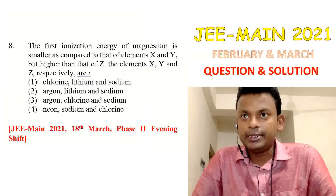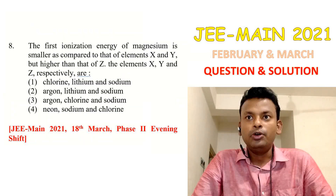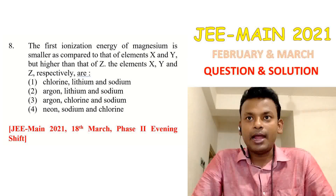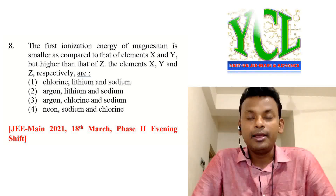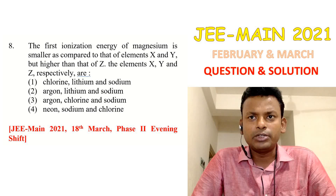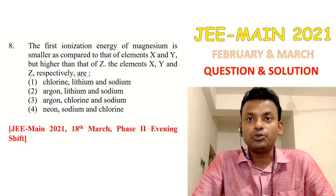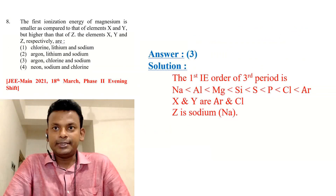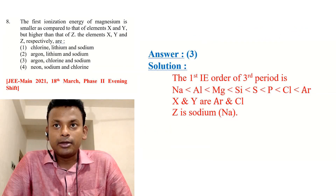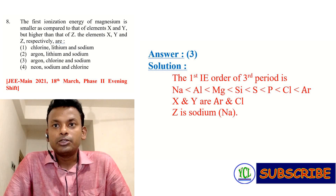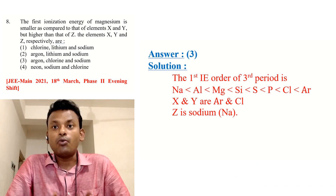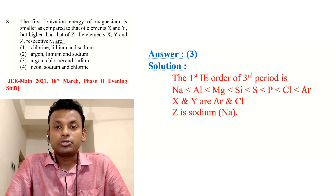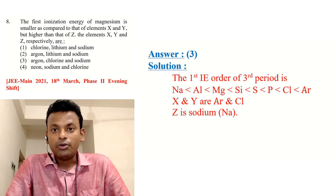Question 8 (last question): The first ionization enthalpy of magnesium is smaller compared to elements X and Y, but higher than that of Z. The elements X, Y, and Z respectively are — options are given. This question was set in JEE Main 2021, 18th March, page 2, evening shift. Answer is option 3: argon, chlorine, and sodium. The first ionization energy order for the third period is Na < Al < Mg < Si < S < P < Cl < Ar. X and Y are argon and chlorine; Z is sodium.